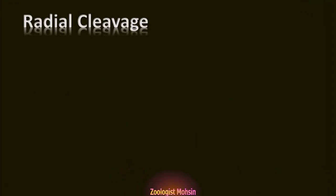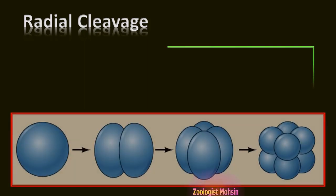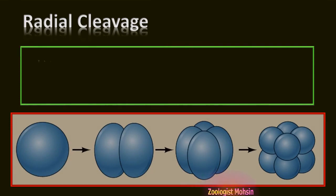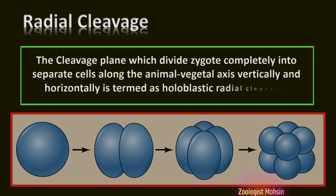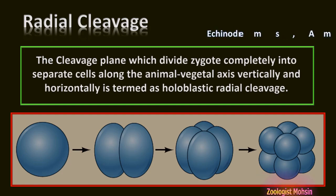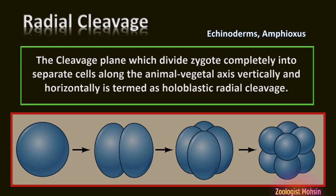Radial cleavage: The cleavage plane which divides the zygote completely into separate cells along the animal-vegetal axis, both vertically and horizontally, is termed as holoblastic radial cleavage. Examples include echinoderms and amphioxus. Radial cleavage produces equal-sized blastomeres located around the central axis either vertically or horizontally.